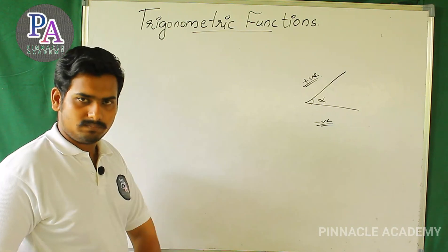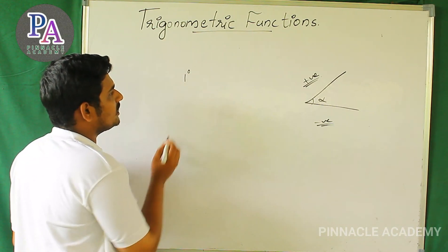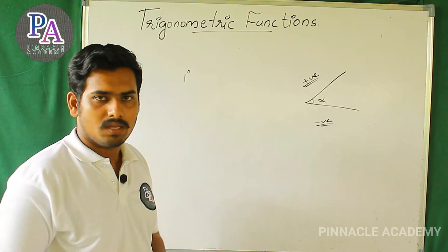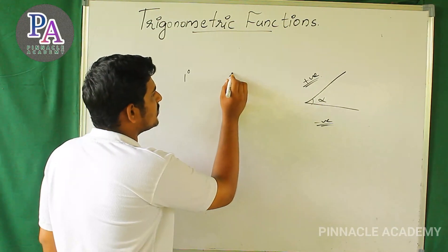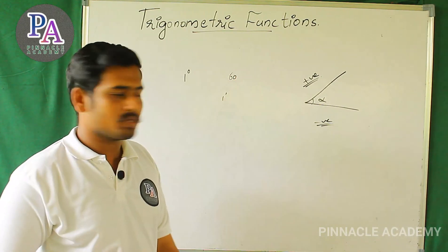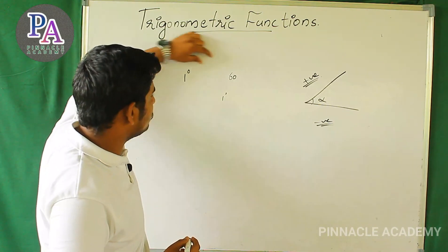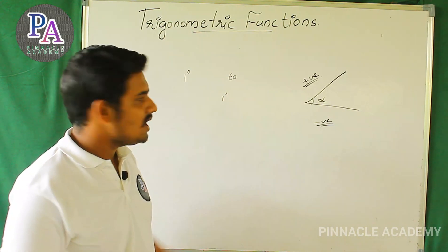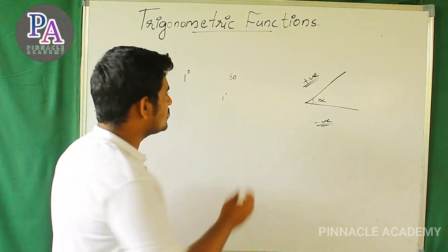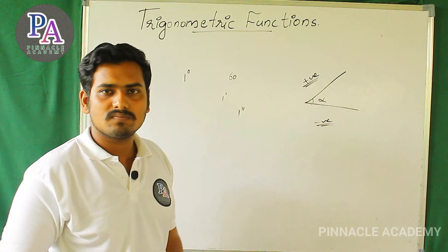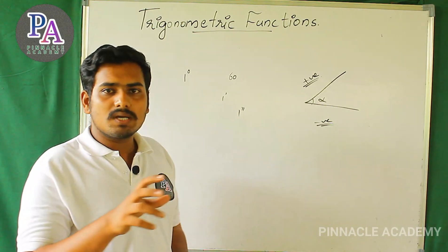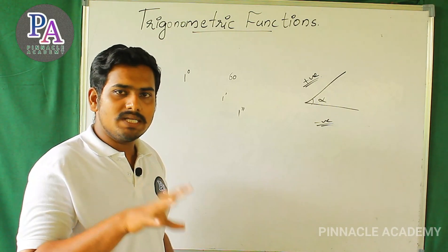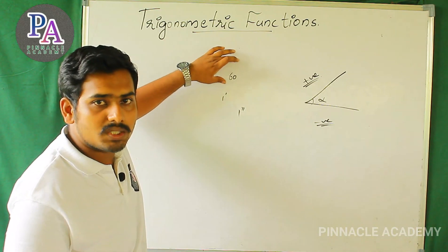So degree — if we say degree measure, we divide into 60 equal parts. We divide 60 equal parts and take one part as one minute. We divide one minute into 60 equal parts to get one second. We use degree measure and radian measure.